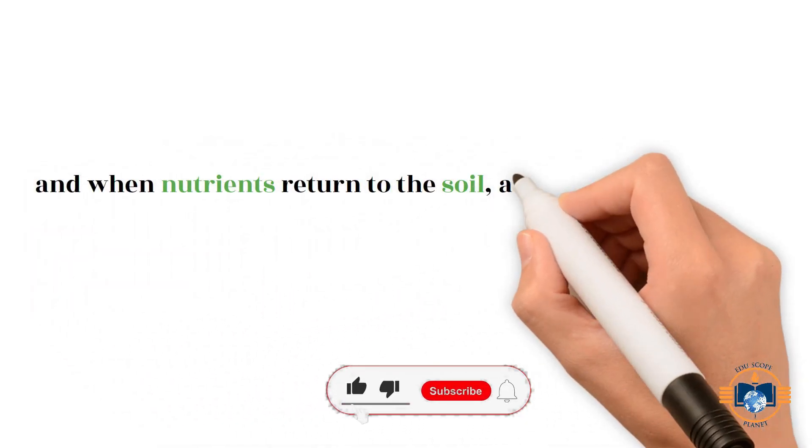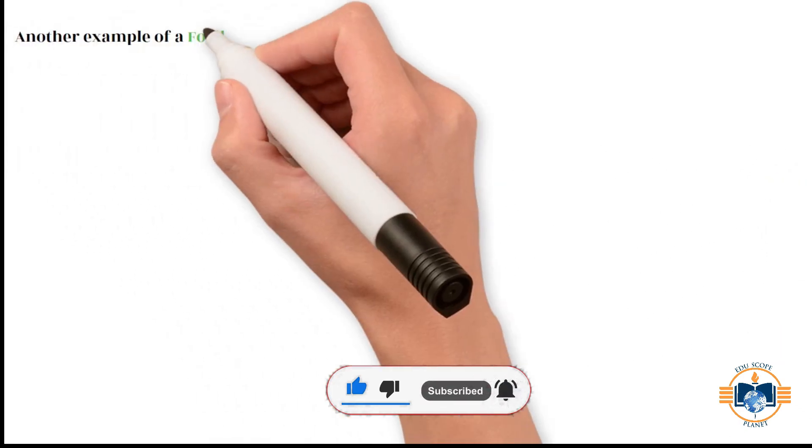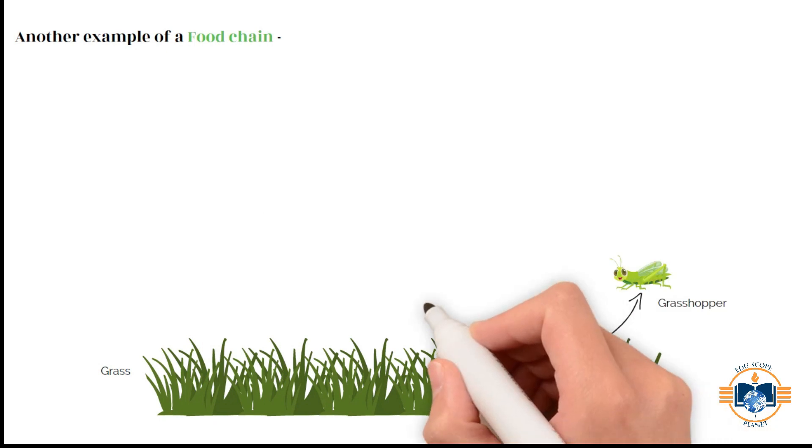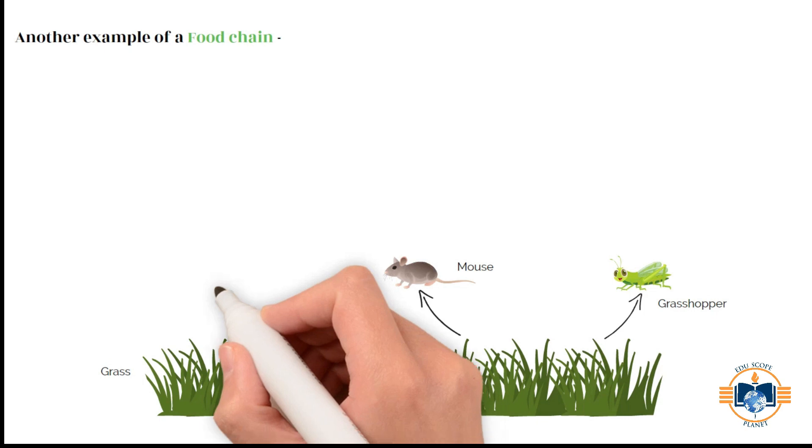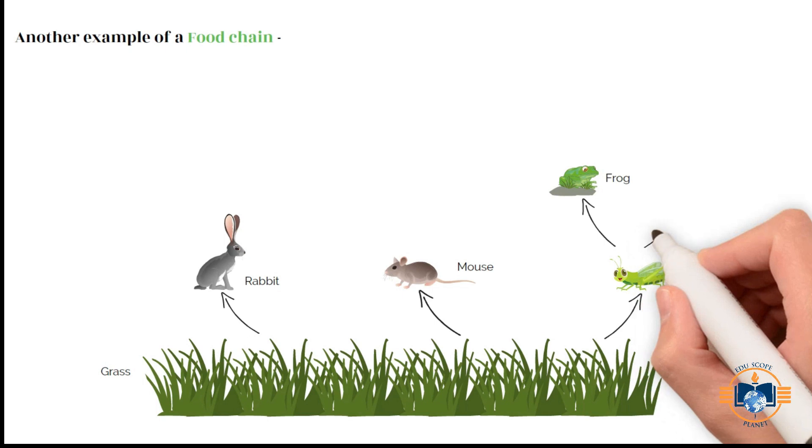Another example of a food chain: Grass is eaten by grasshopper. Grass is eaten by rat and rabbit. Grasshopper is eaten by frog. Grasshopper is eaten by bird.